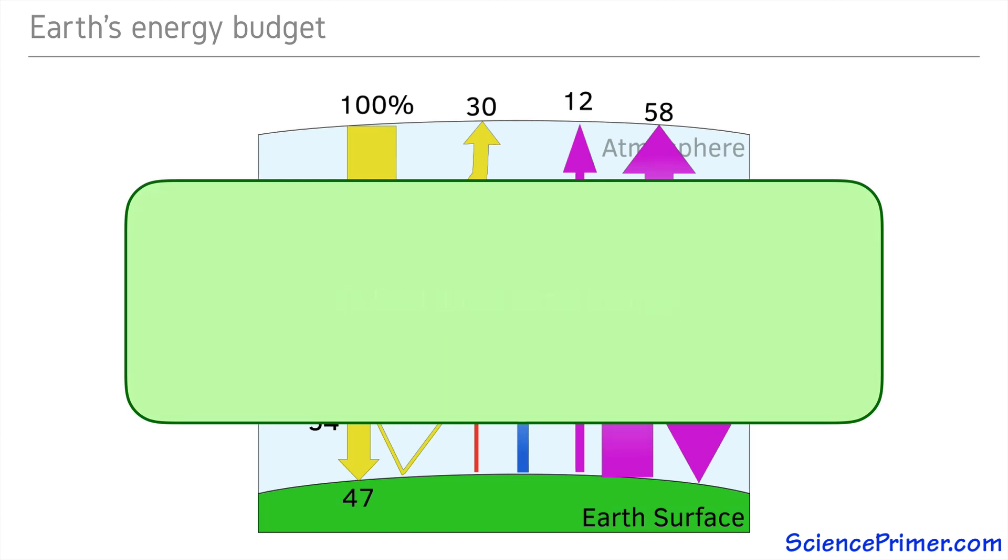Of course, this 341 watts per square meter is an average. In reality, this energy is unevenly distributed over both space and time. Patterns in where and when solar energy falls on the Earth create variations in climate and the different ecosystems found across the globe.